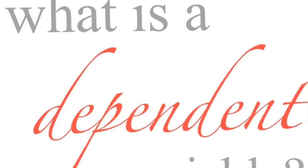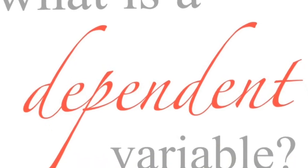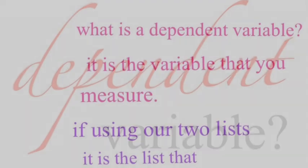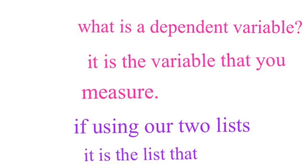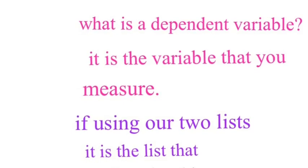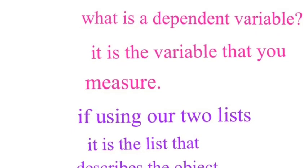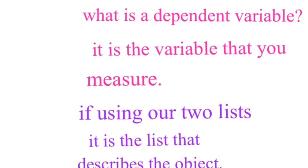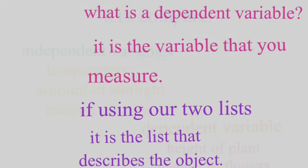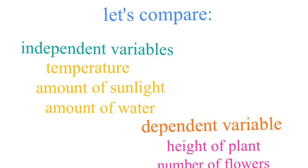So what's a dependent variable? Well, it's what you measure in the experiment. It's also the other list, right? So you might be saying, I wonder how changing the temperature affects the height of the plant. The temperature is the environmental list, that's independent variable. The height of the plant is the dependent variable.